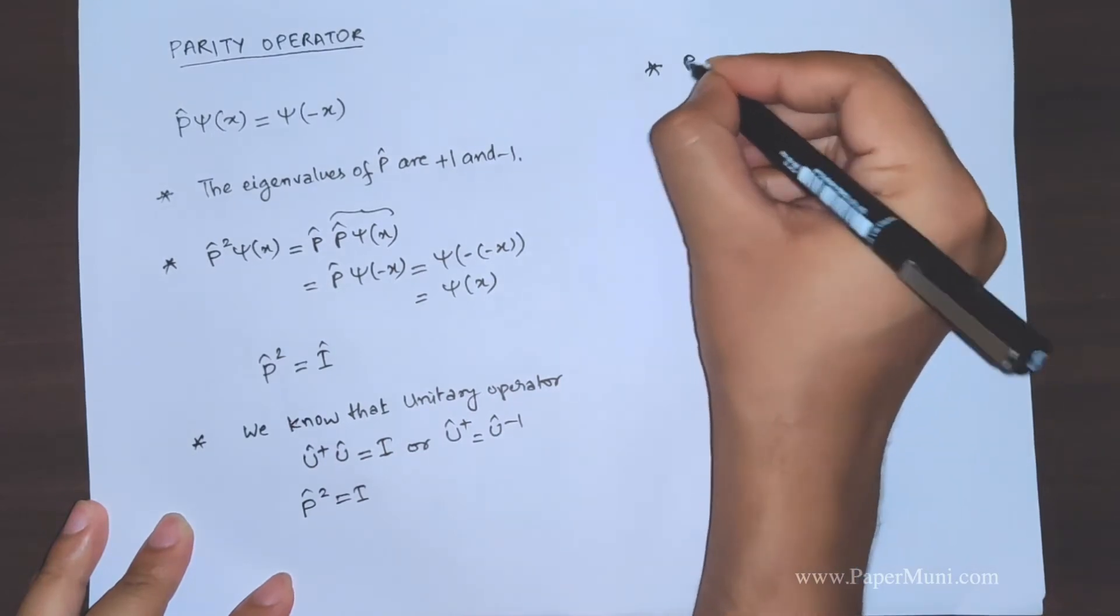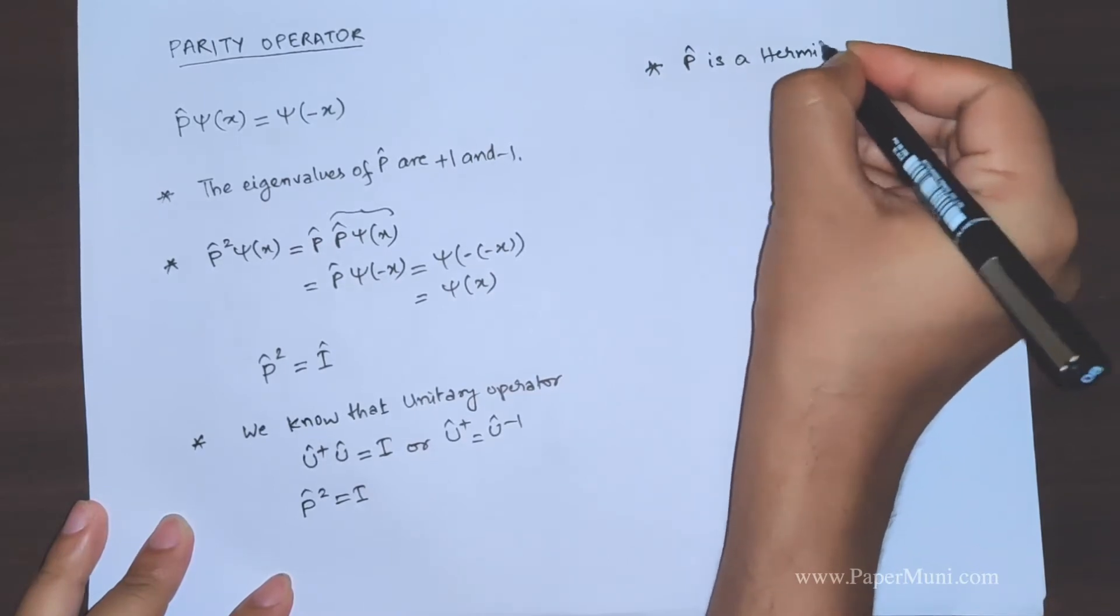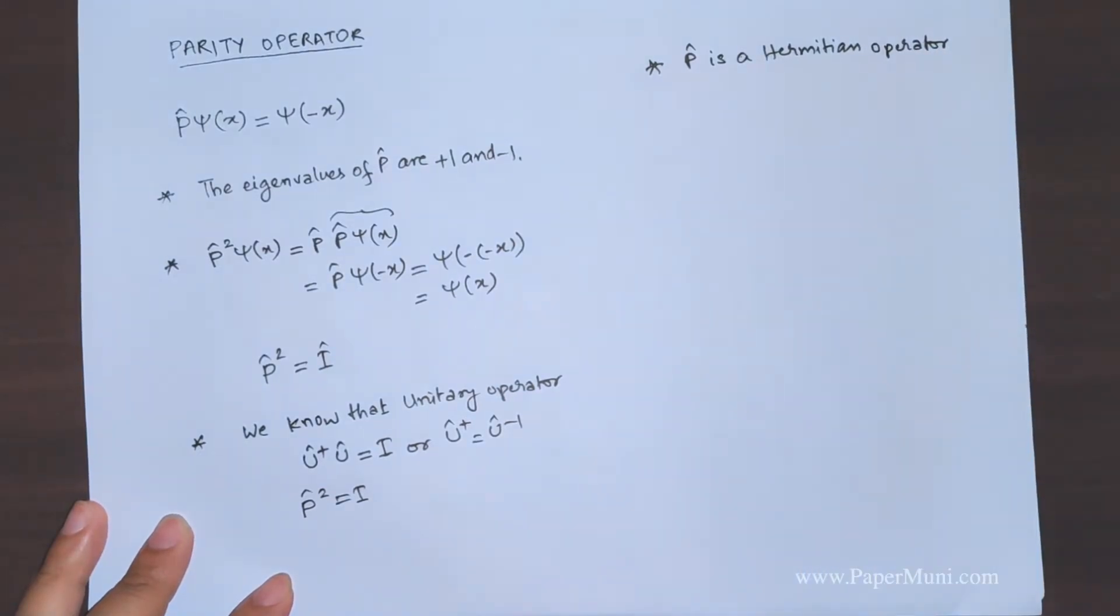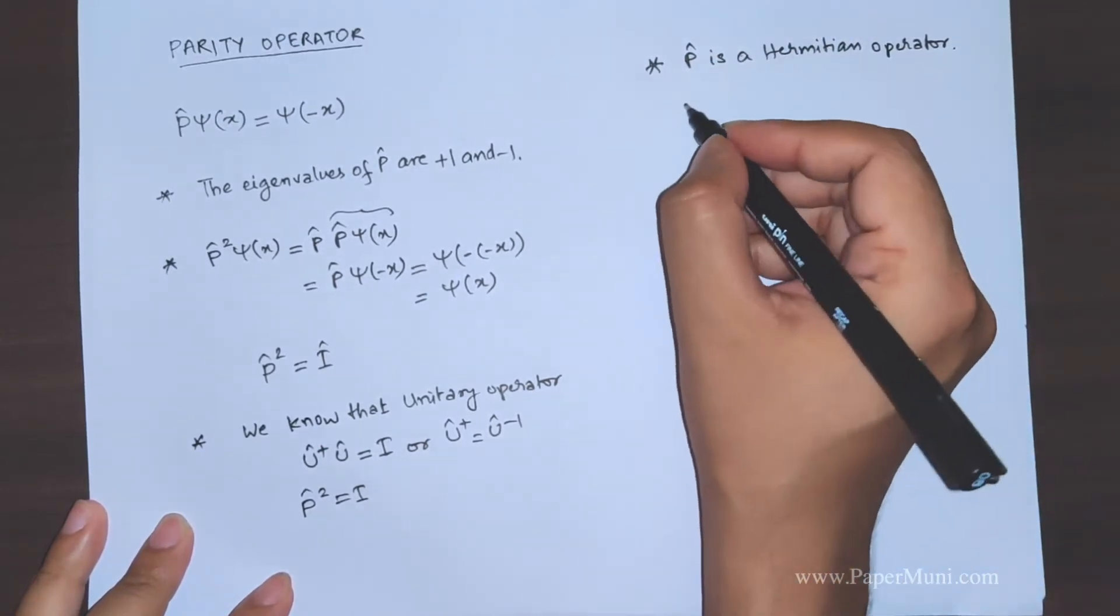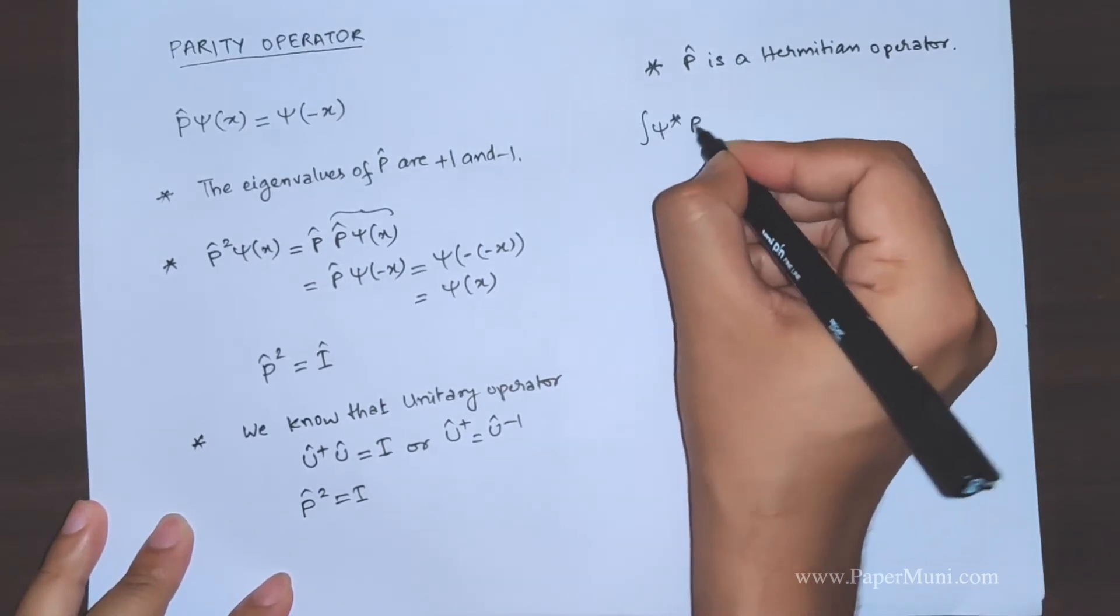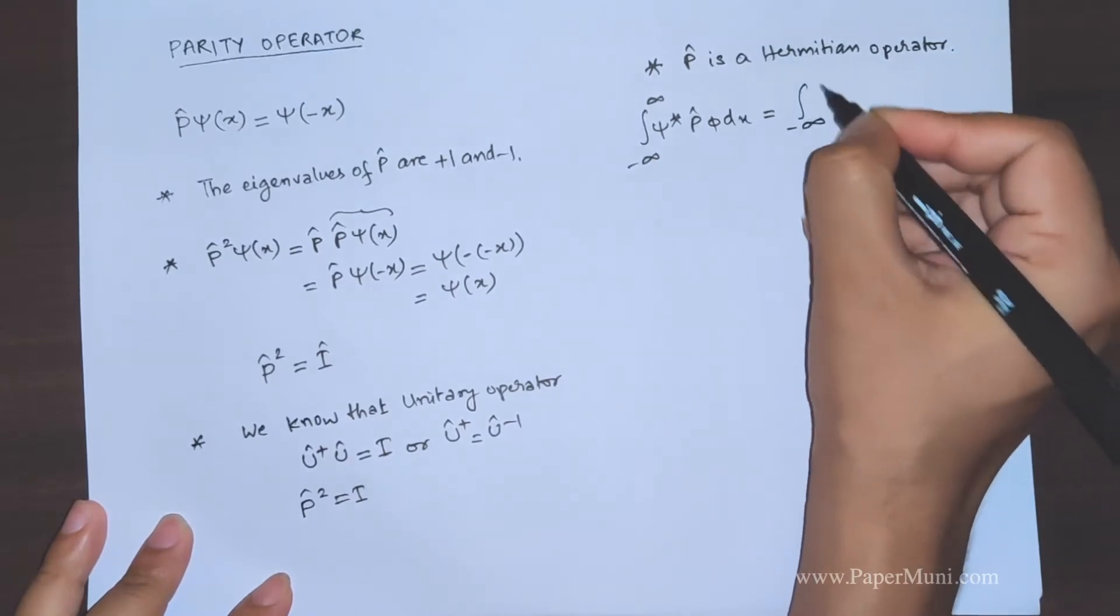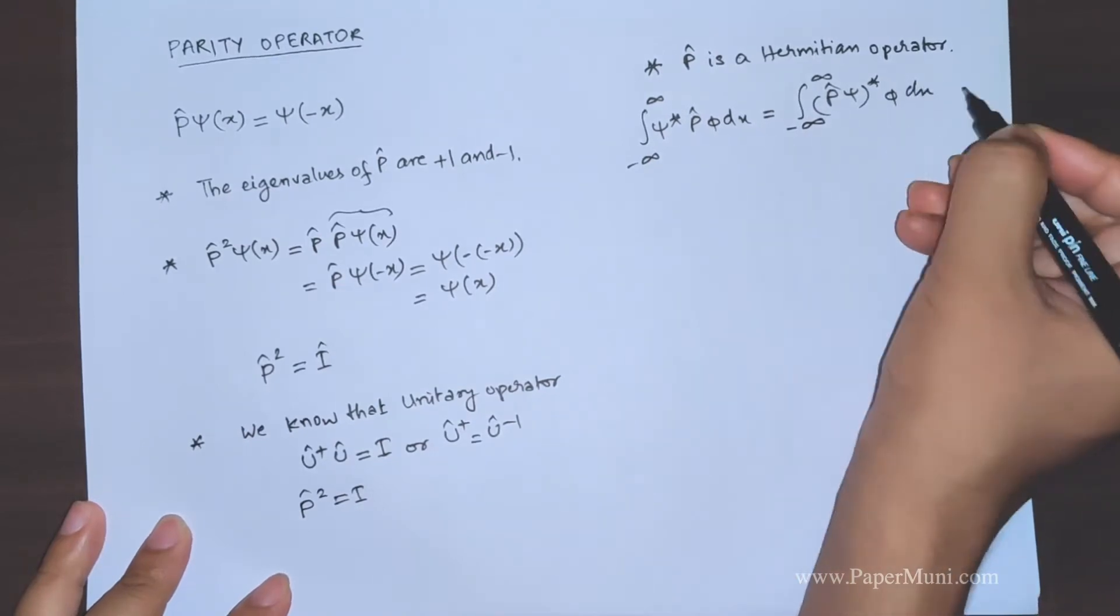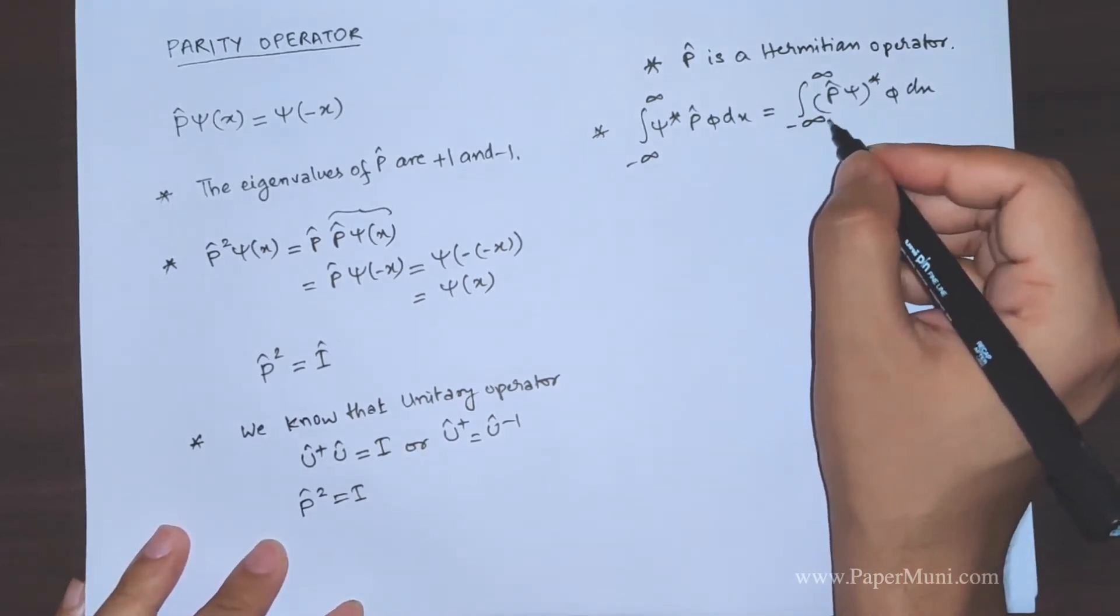Also we should know that P, parity operator, is a hermitian operator. One can prove it using the condition of the hermitian operator, which is ∫ψ* P operating on φ dx from minus infinity to plus infinity equals ∫(Pψ)* φ dx. So we can use this hermitian operator condition to prove it.